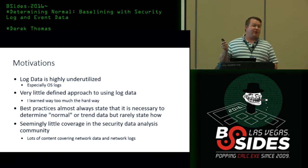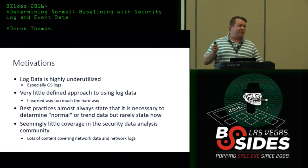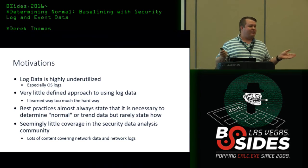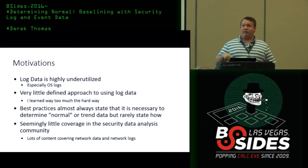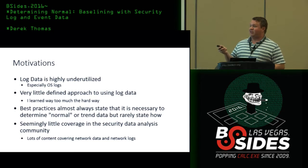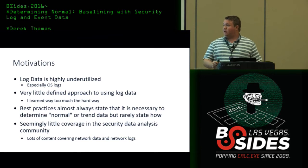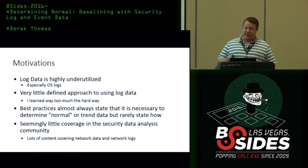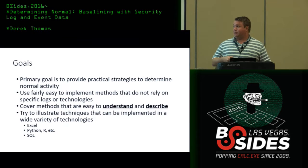The main reason I'm giving this presentation is that when I was looking through best practices in the beginning, everything says look for normal activity and look for trending, but nothing ever says how to do that. It's often visualized as 'look for this spike' — but sometimes that spike is normal and may not need investigating. I find there's little coverage of security data analysis pertaining to Windows logs and network data, so I'm hoping to cover that gap.